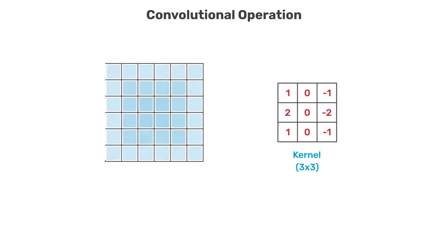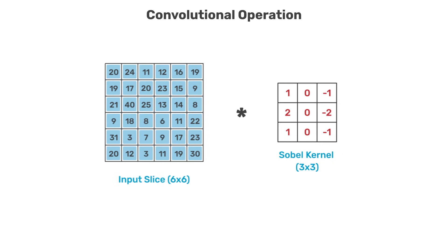In this example, we show how a 6x6 input is convolved with a 3x3 kernel. Here we use a well-known kernel often used in image processing called a Sobel kernel, which is designed to detect vertical edges.